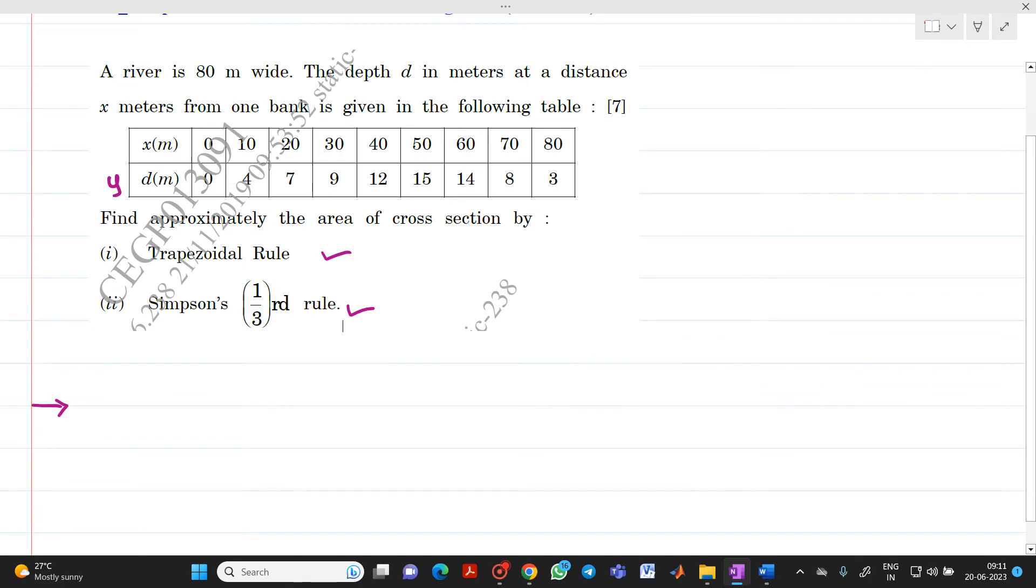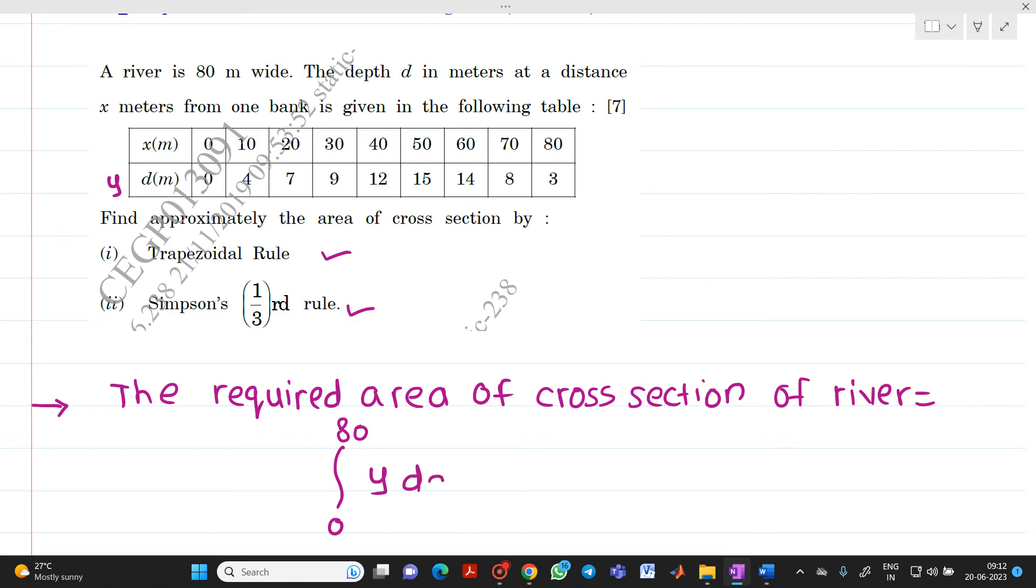Now, what is required? The required area of cross section of the river. How to write it? It's very simple. Limits will be from 0 to 80, and we don't know what the function is, so I will write it as integral from 0 to 80 of y dx, or f(x) dx. No need to go into the function because we have these values given.